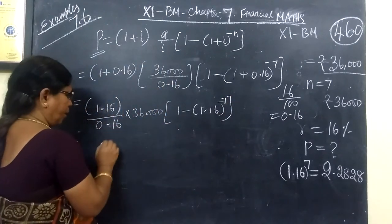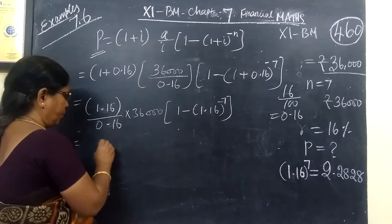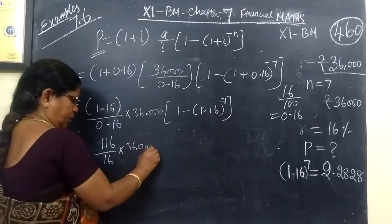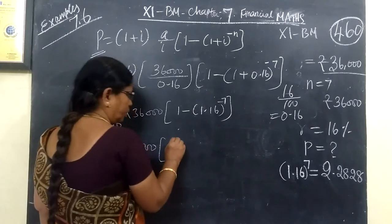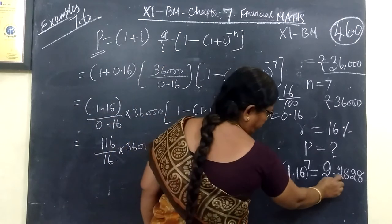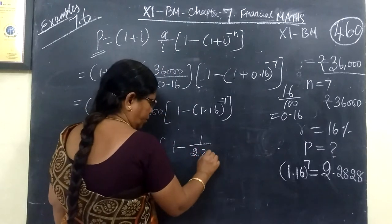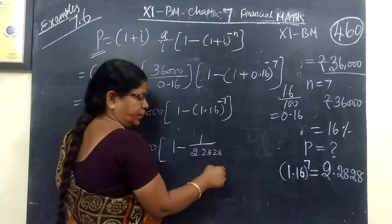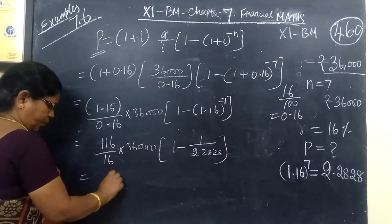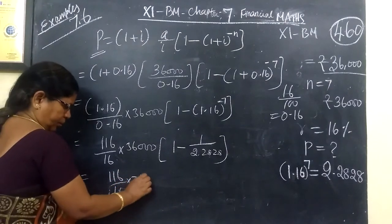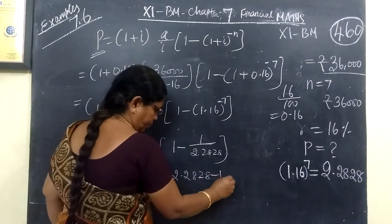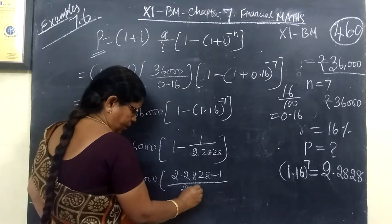We will add step to step, so equal to, remove the point, here also point 2 digits, so 16 into 36,000, then 1 minus, this value is 2.2828, minus 1 minus, so cross multiply, so 116, then 36,000, cross multiply 2.2828.